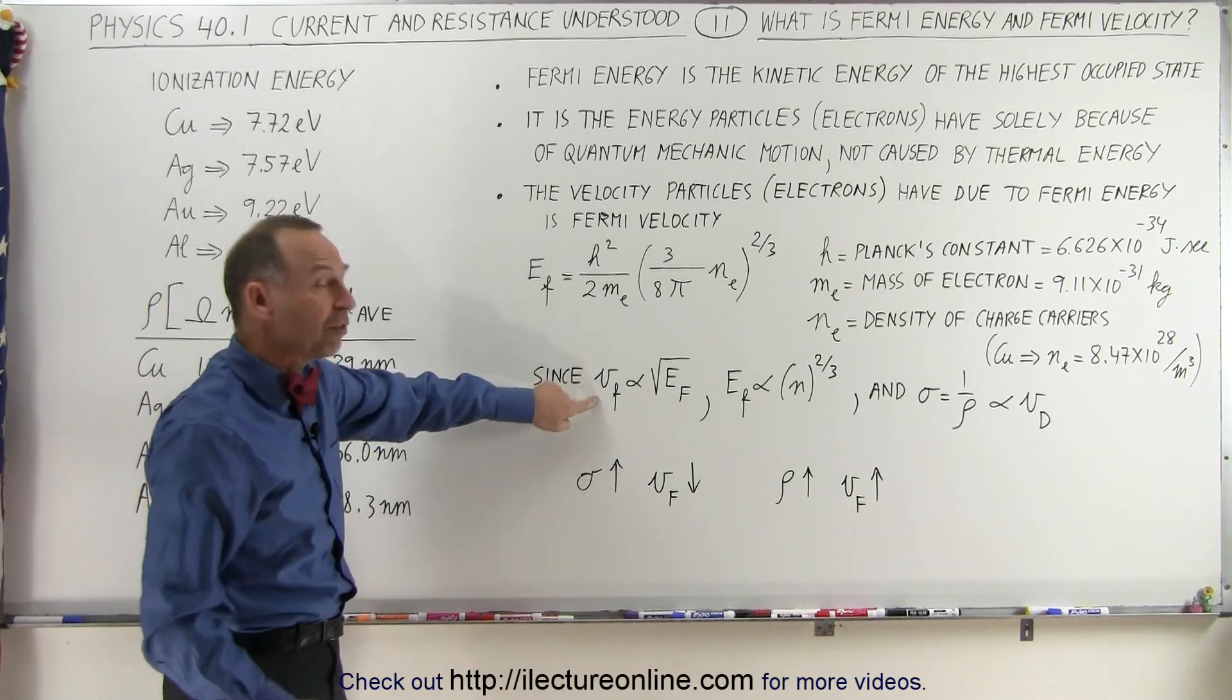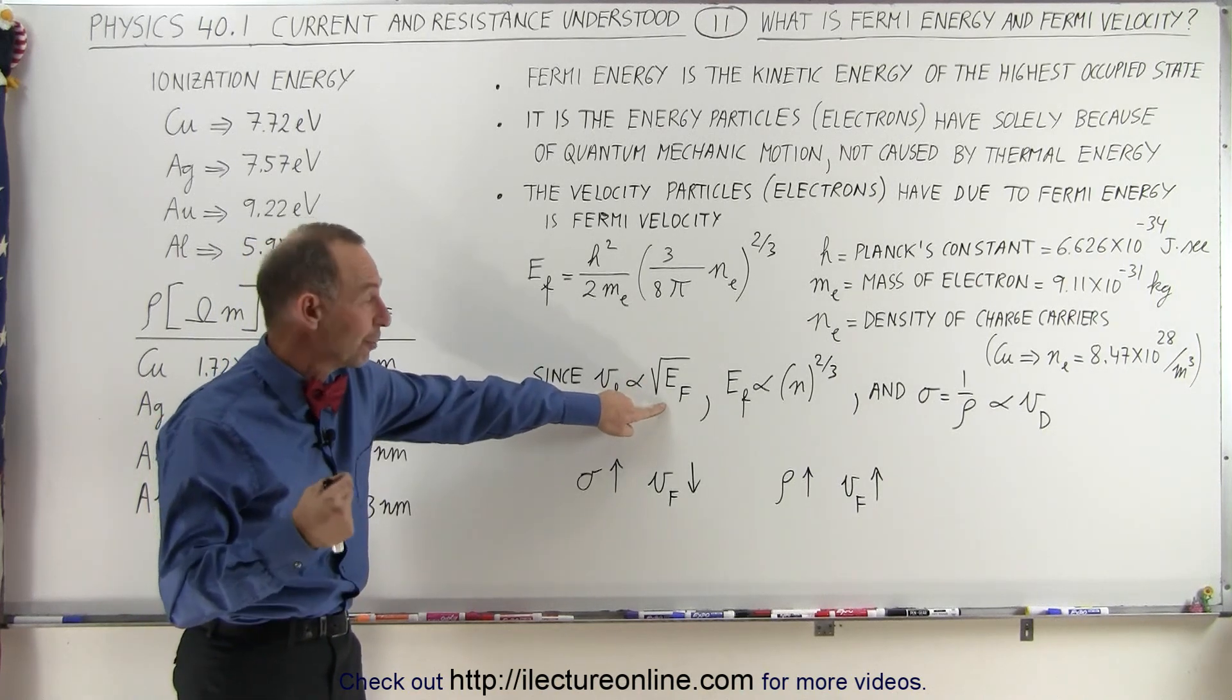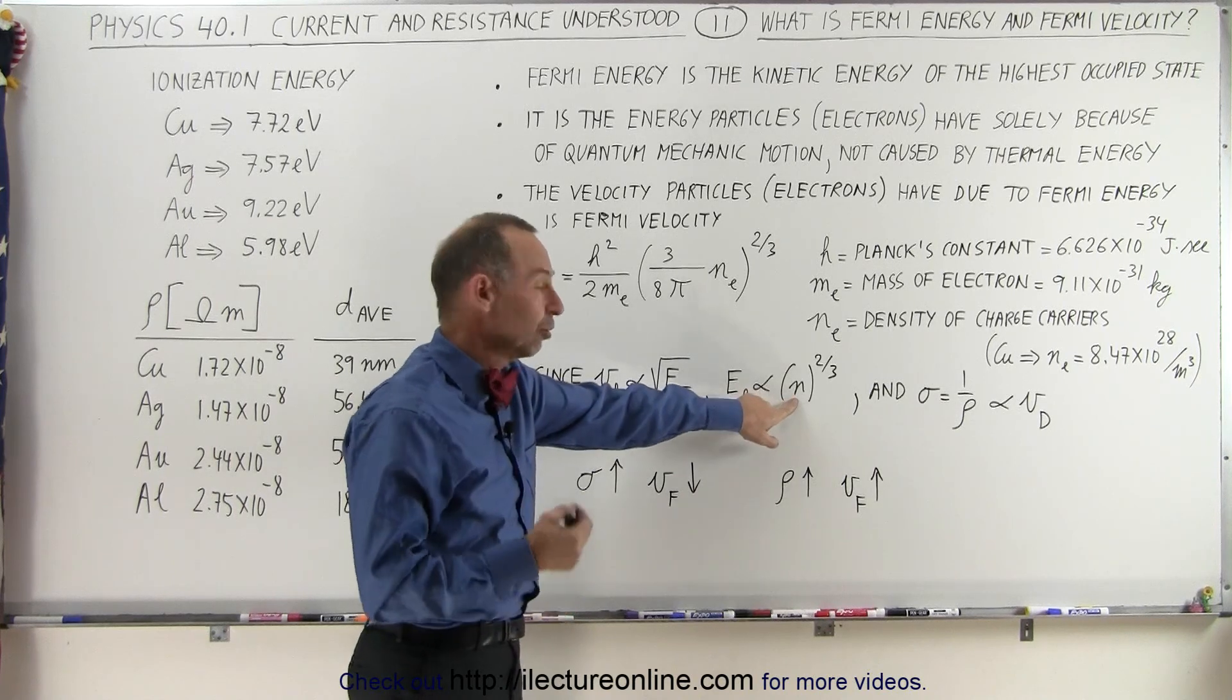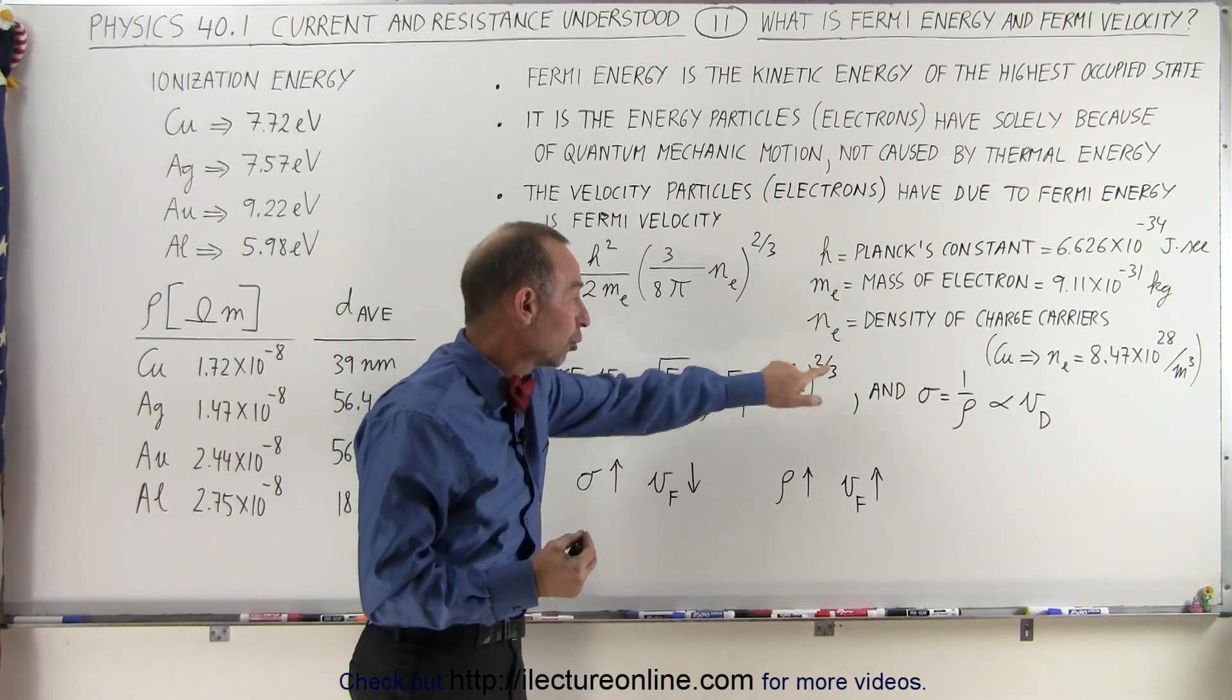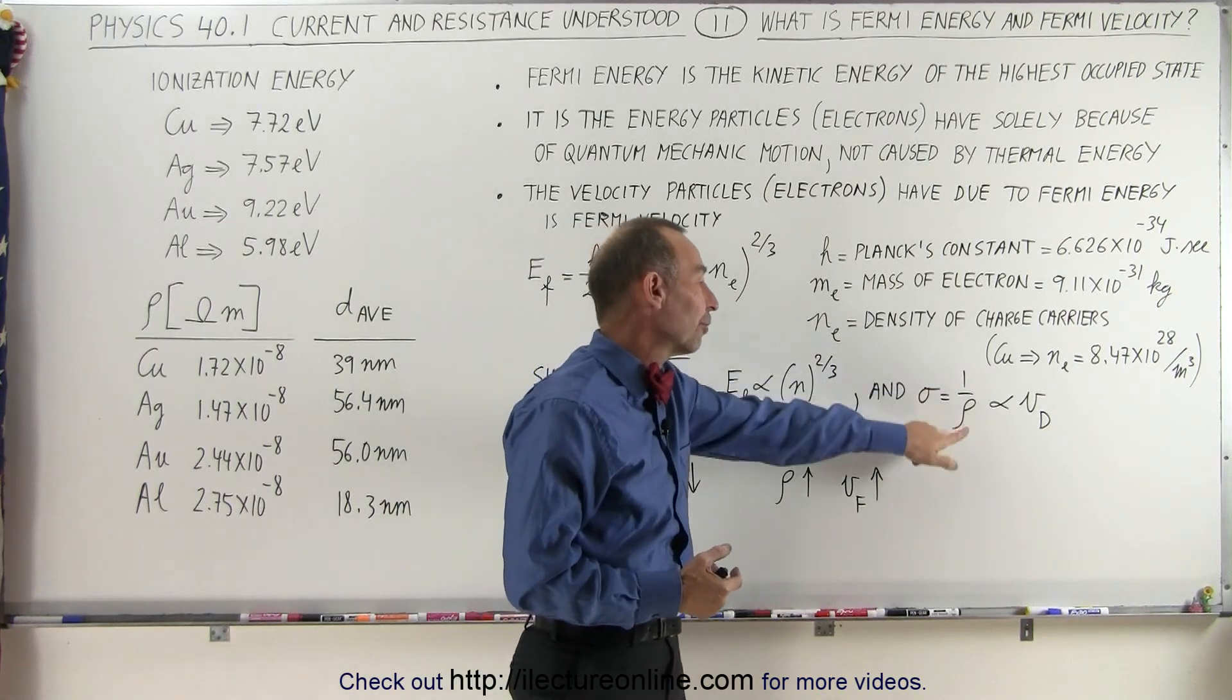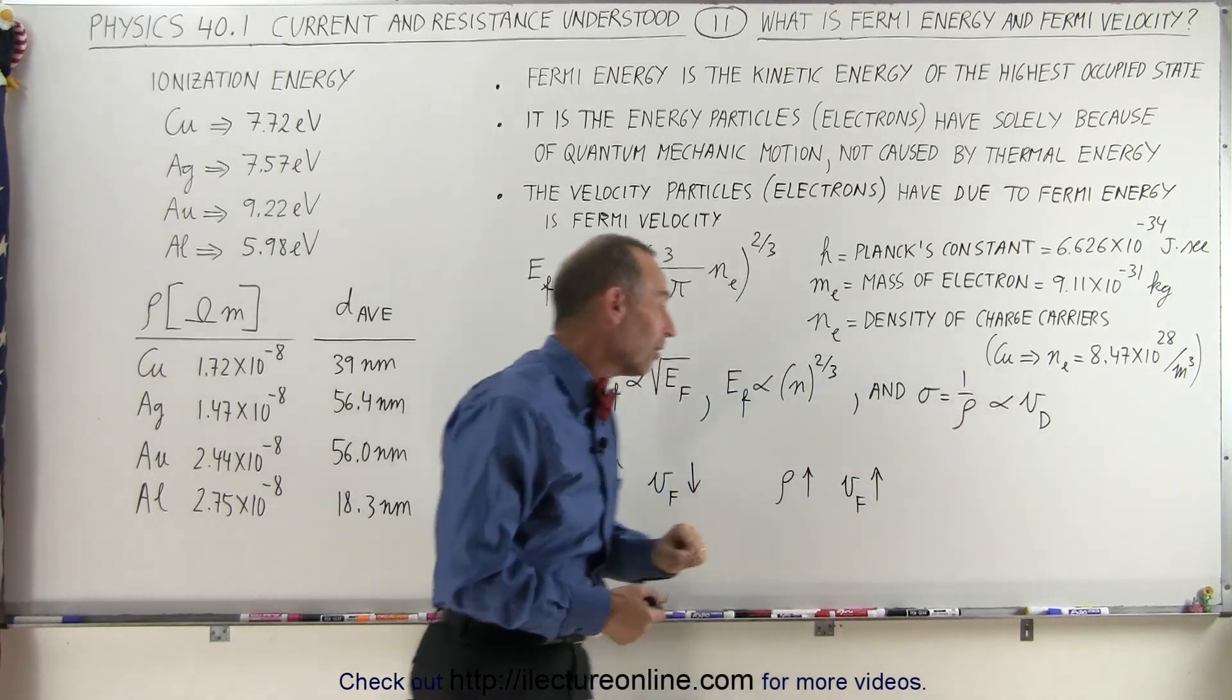Since the velocity, the Fermi velocity, is proportional to the square root of the energy, the Fermi energy, and the Fermi energy is proportional to the density of the charge carriers to the two-thirds power.